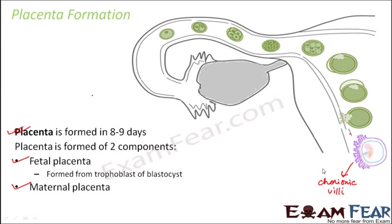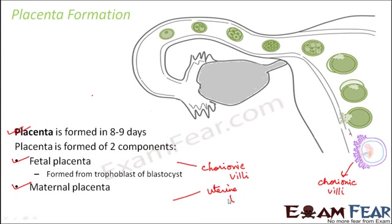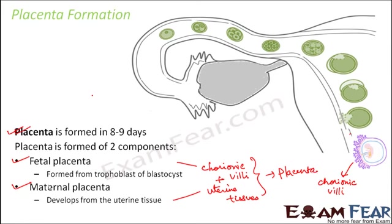The chorionic villi combine with the uterine tissue to form the placenta. On behalf of the fetal placenta, you have the chorionic villi as projections on the trophoblast; on behalf of the maternal placenta, you have the uterine tissue on the wall of the uterus. Both combine together to form the structure called placenta. The maternal placenta thus develops from the uterine tissue.